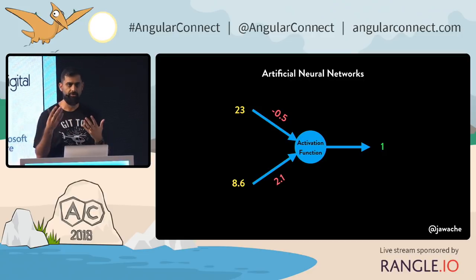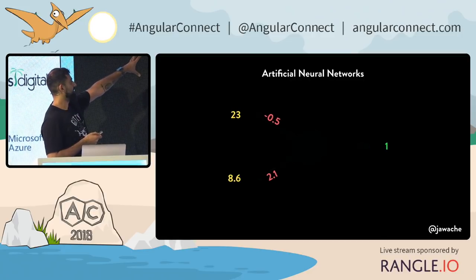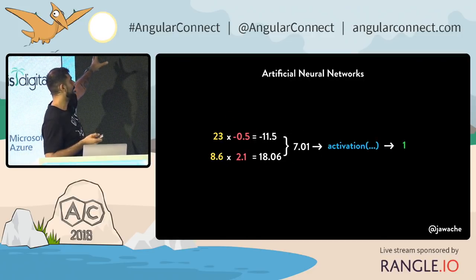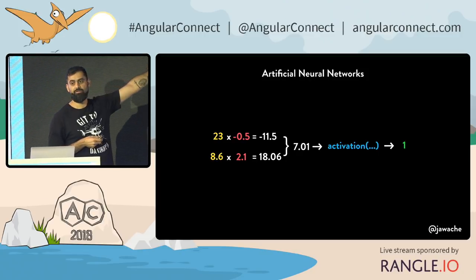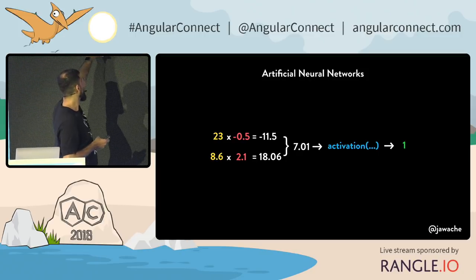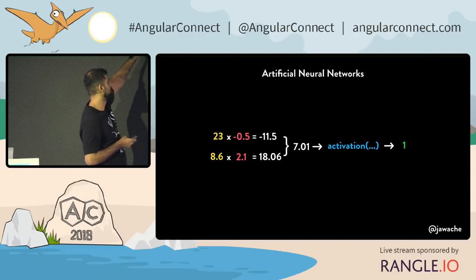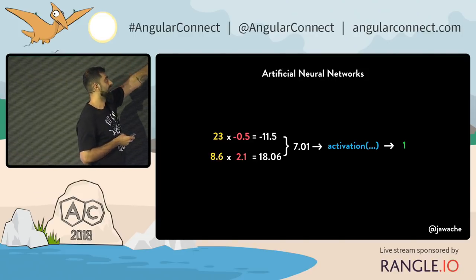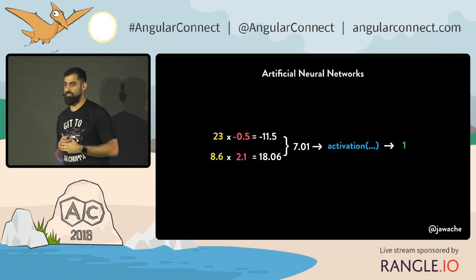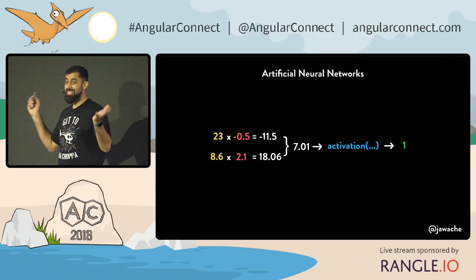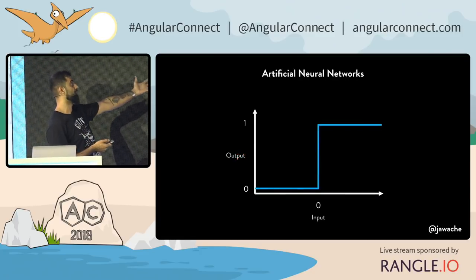You can imagine coding this up in Java — it probably wouldn't take you too long. Let me flesh this out a little bit more. This is the mathematics involved in building a neural network: you have some numbers coming in, you multiply them by the weights, you sum them together, and pass them to the activation function.